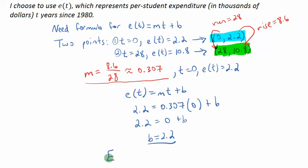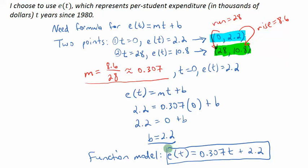So my equation, it's an equation, but it's also a function. So I will call this my function model. This is the equation we'll use to model the behavior of this expenditure. e of t equals my slope .307 times my input variable t plus my b value, which is 2.2. So this is my model that I can use now to answer any questions about expenditure.